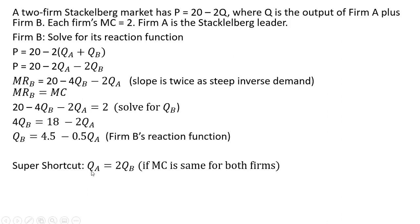The Stackelberg leader's output will be twice that of the following firm. So we make a substitution into firm B's reaction function and we're going to solve for firm B's output and firm B will produce 2.25 units.